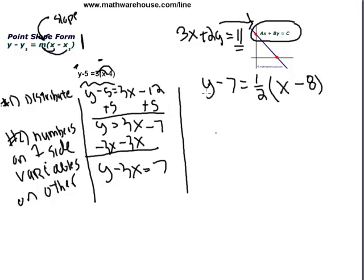Okay, so step number one, distribute the slope. And you have y minus 7 equals one-half of x minus one-half of 8, which is really y minus 7 equals one-half of x minus 4.